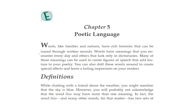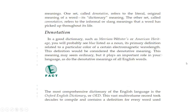Definitions. While chatting with a friend about the weather — British people say chatting, Americans say talking — you might mention that the sky is blue. However, you will probably not acknowledge that the word blue may have more than one meaning. In fact, the word blue and many other words have two sets of meanings: one called denotative, which refers to the literal, original, dictionary meaning of the word; and the other set, called connotative, which refers to the informal or slang meanings that a word has picked up throughout its life.